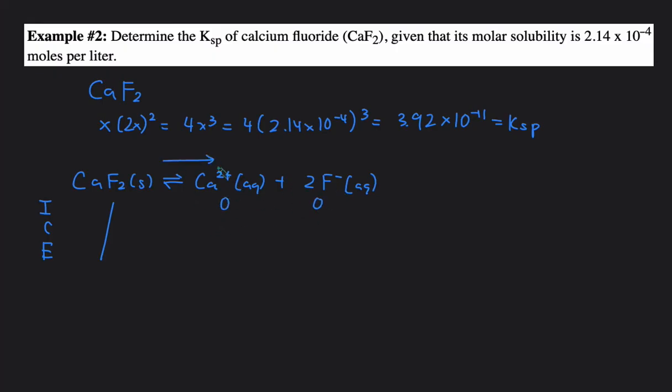The reaction will be going towards the right. This will be +X, and this will be +2X because of the coefficient 2. E would just be X because 0 + X is X, and then for the E line for F would just be 2X, so 0 + 2X. Then we can set up the Ksp expression. Ksp is going to equal the concentration of Ca2+ times the concentration of F- squared, because the coefficient of F is a 2, so squared.